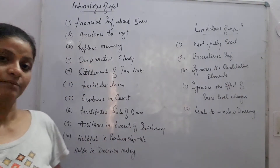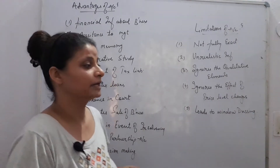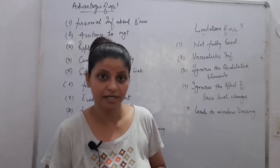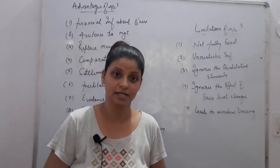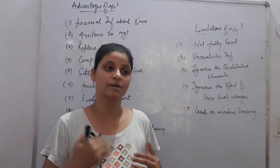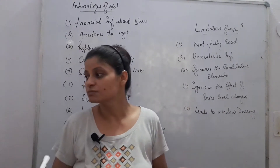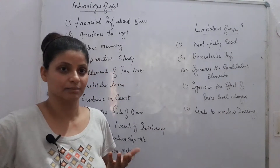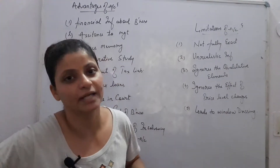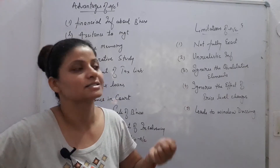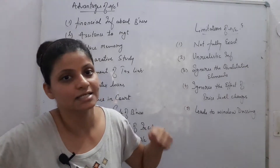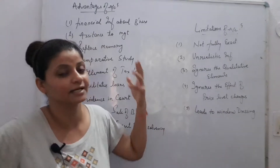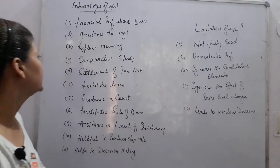Next, settlement of tax liabilities. How much profit is going to happen to us, we need to calculate and pay tax accordingly. How much profit, how much tax — we need to calculate any issues in this case. Accounting helps us determine how much profit is happening and what tax liability arises.